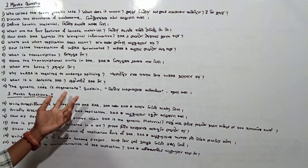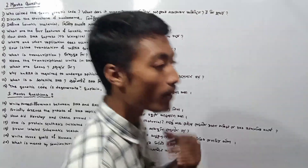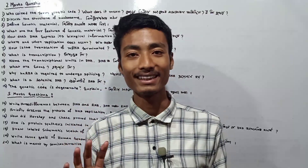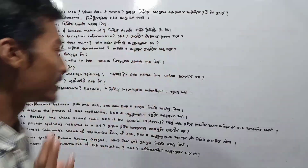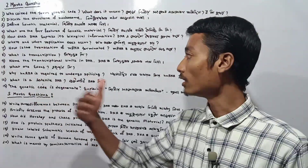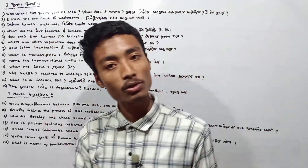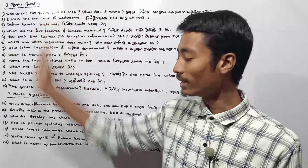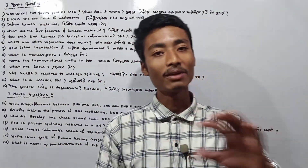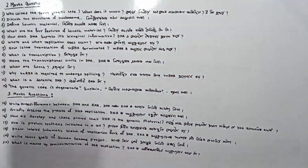Does genetic code degenerate? Explain the genome exactly. This question uses amino acids — this is very important. Then you will know more about the content. You will write a question in a different way and write a pen copy directly.